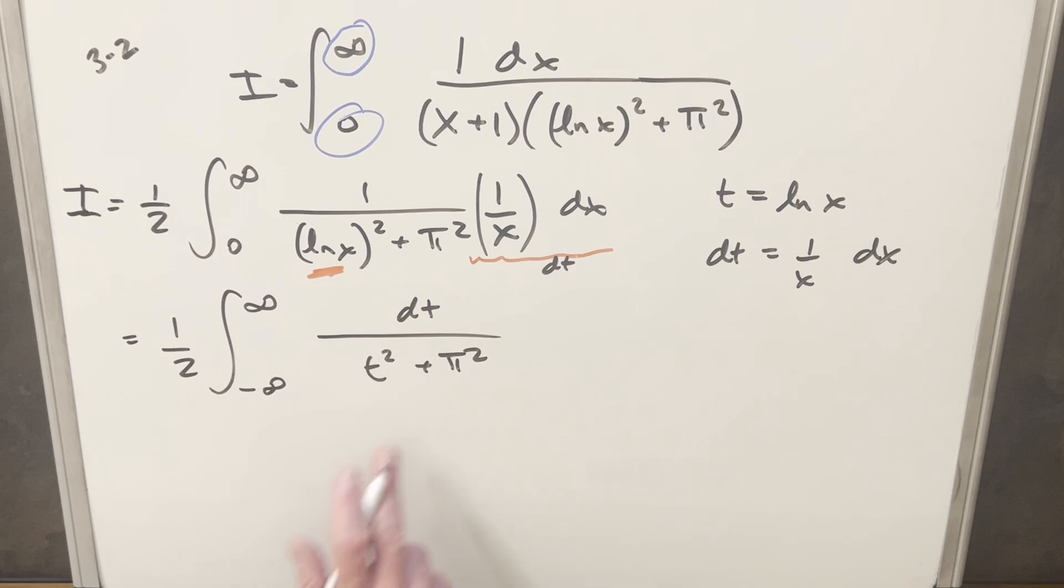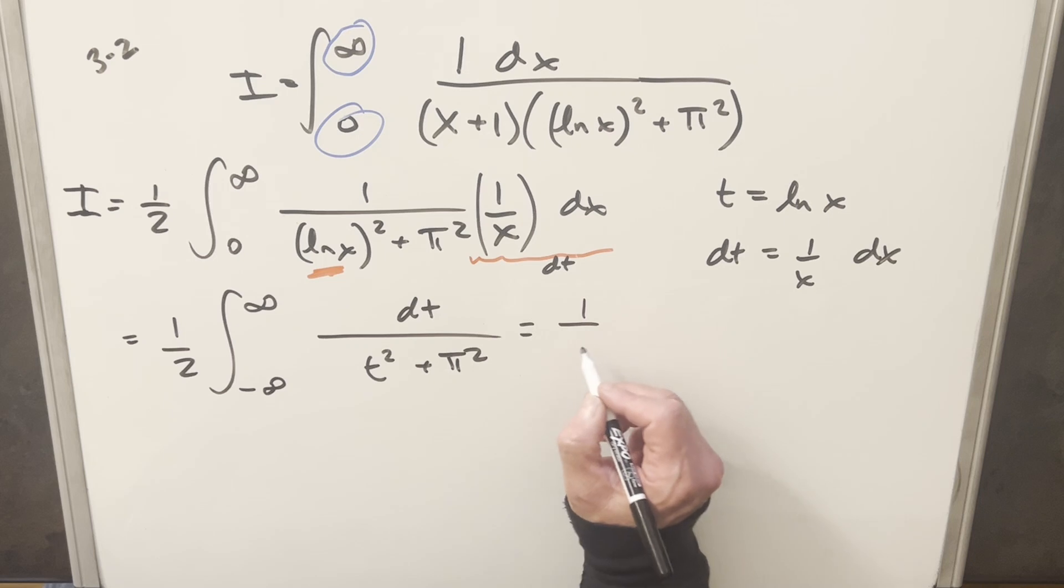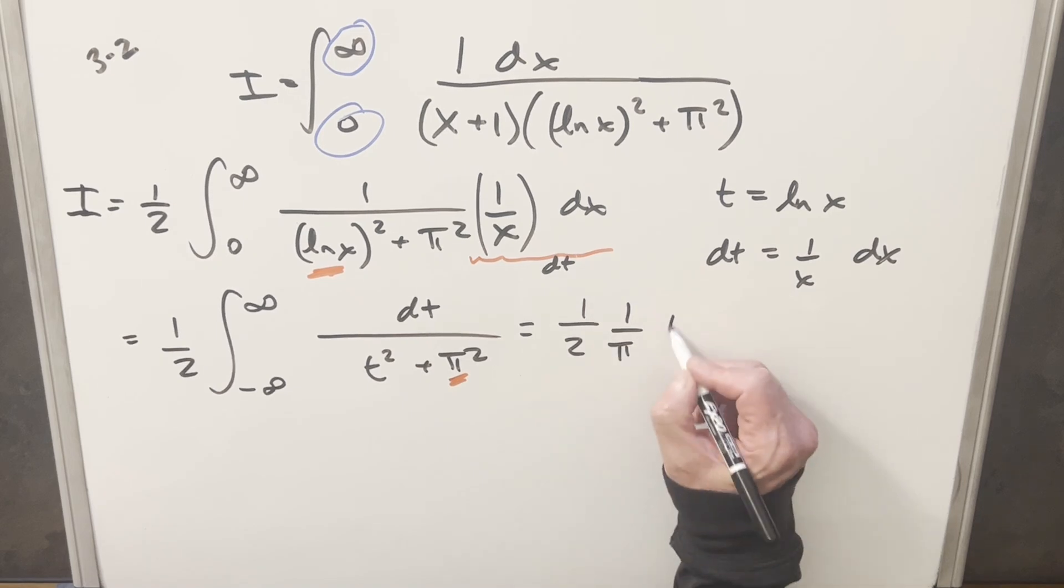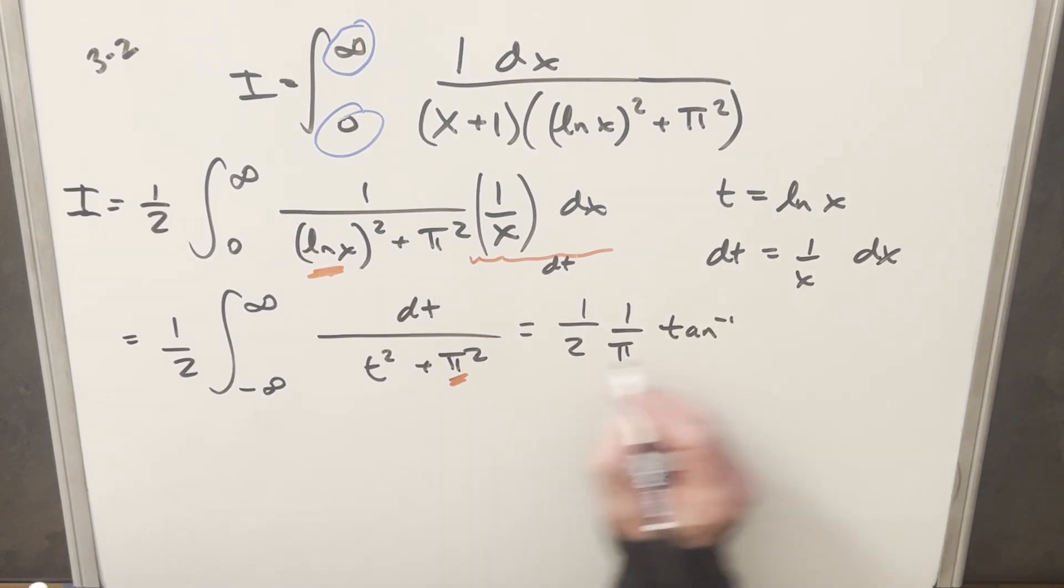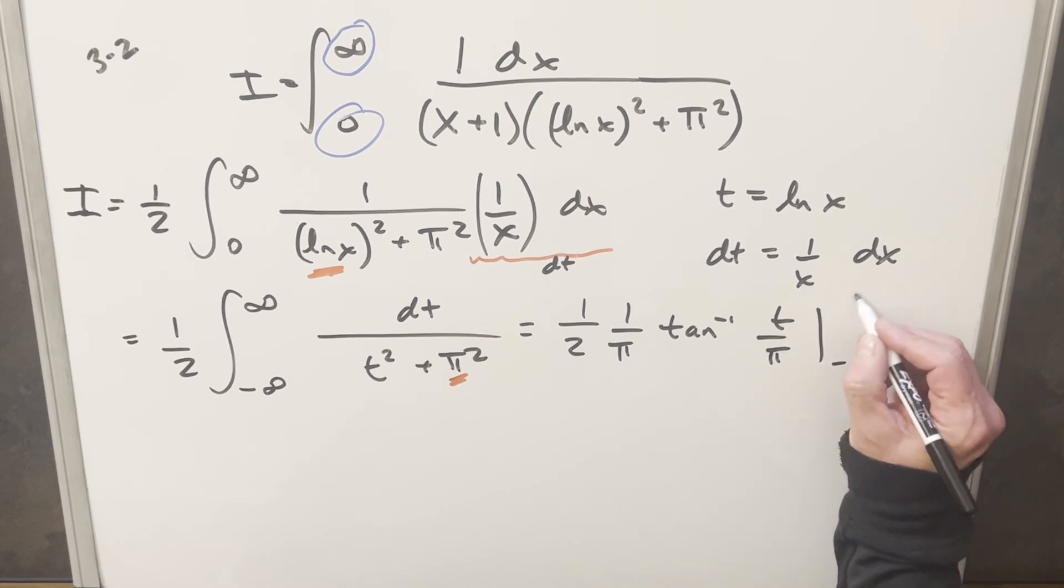But now this is perfectly set up. This is actually in the form for arctan. So using the arctan formula, we'll go ahead and integrate. This is going to become one of our 1 over 2 in front. And then for our formula, we're going to have this value in the denominator. So it's going to become 1 over pi here, arctan of just t over pi. And we just need to evaluate from minus infinity to infinity.